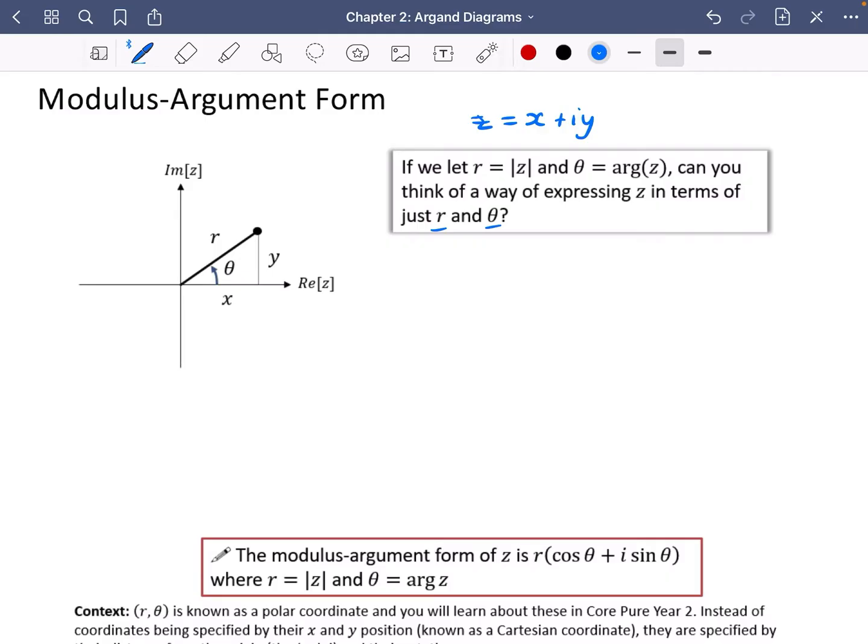Well, looking at this triangle, we should be able to tell there is a relationship between x and r and theta. We know that the cosine of theta is equal to the adjacent, which is x, over the hypotenuse, which is r. So multiplying both sides by r gives us that r cos theta is equal to x.